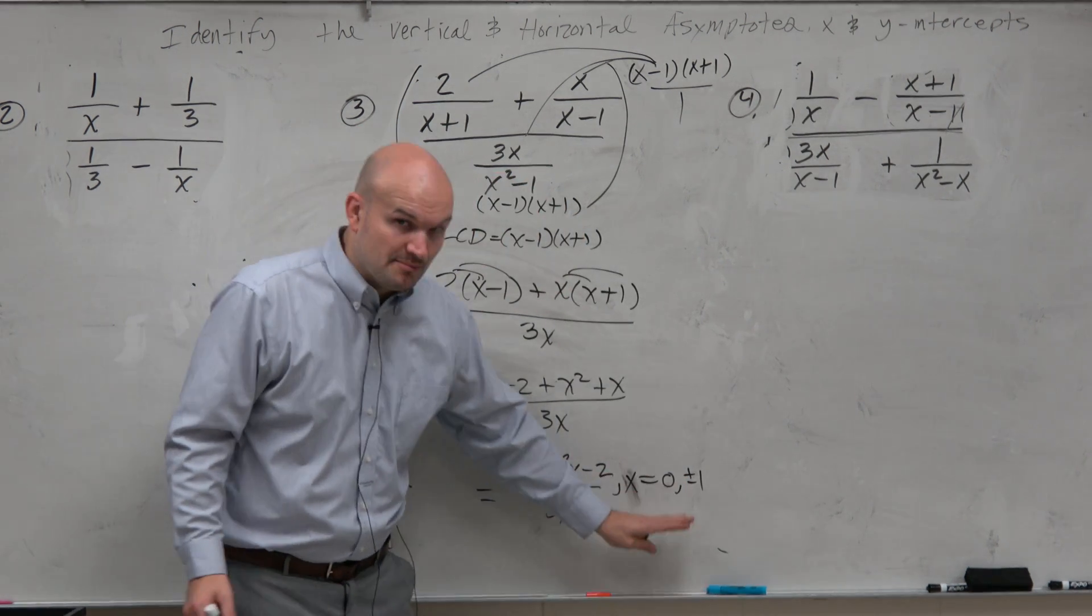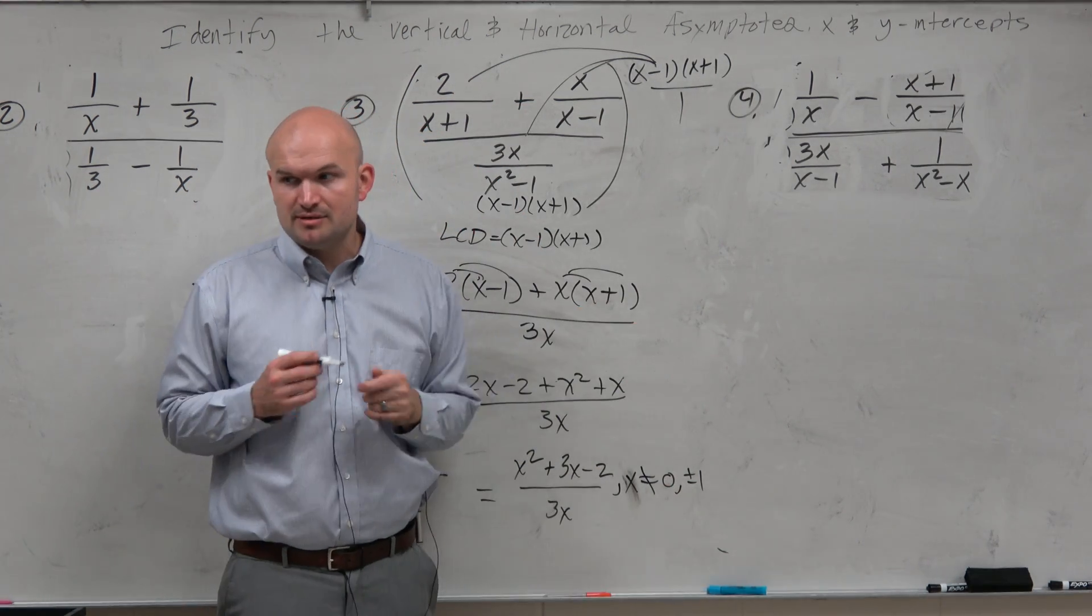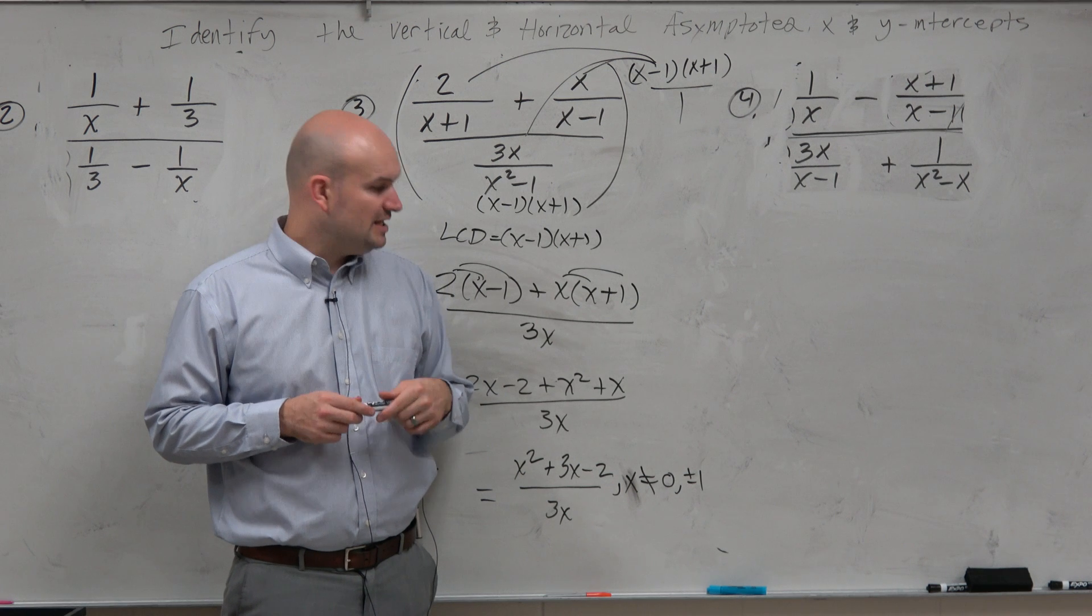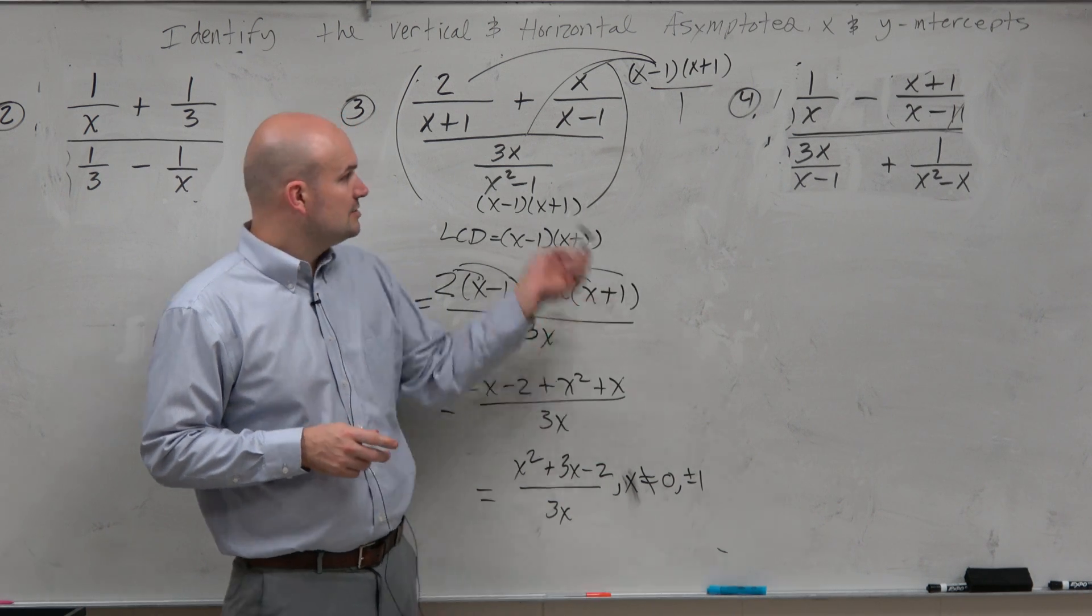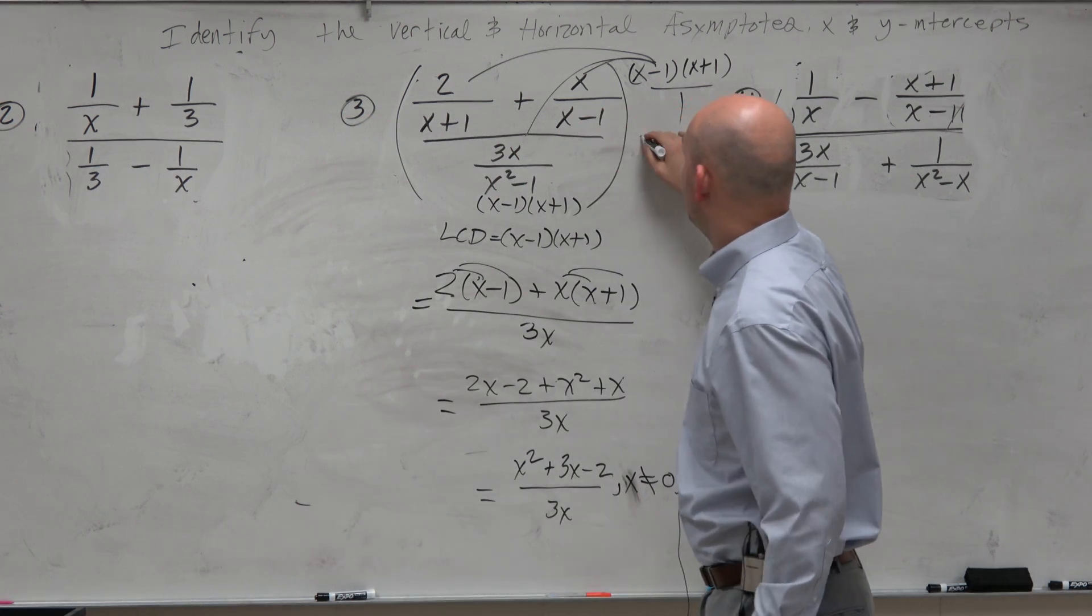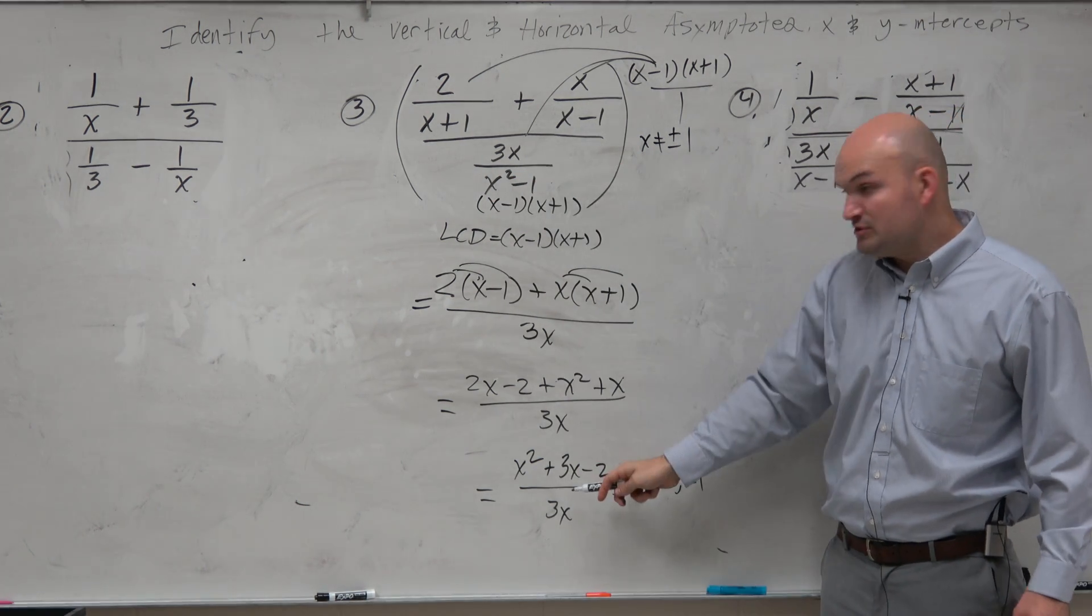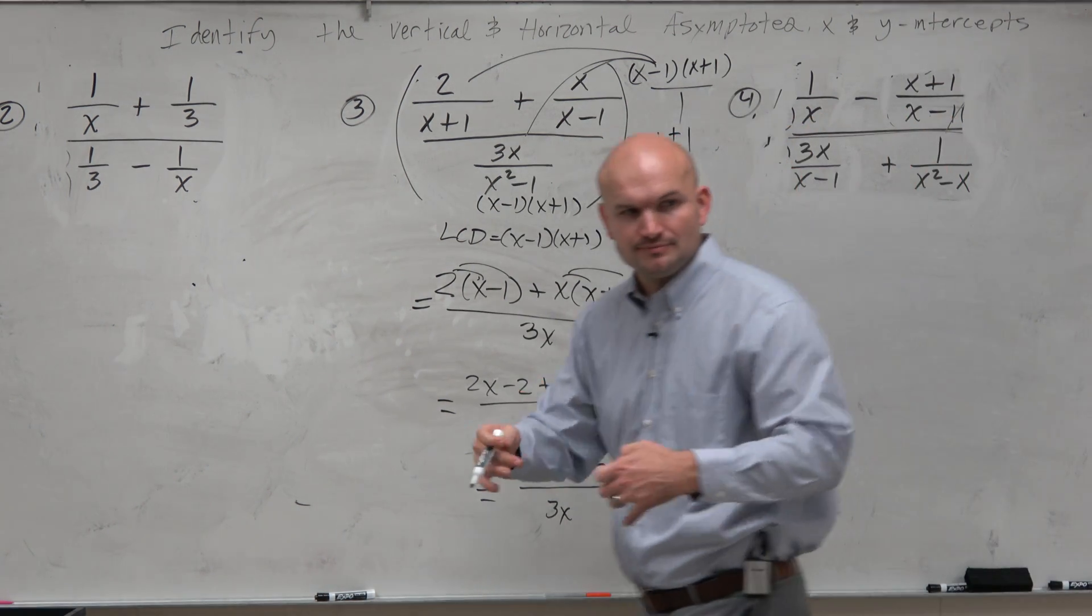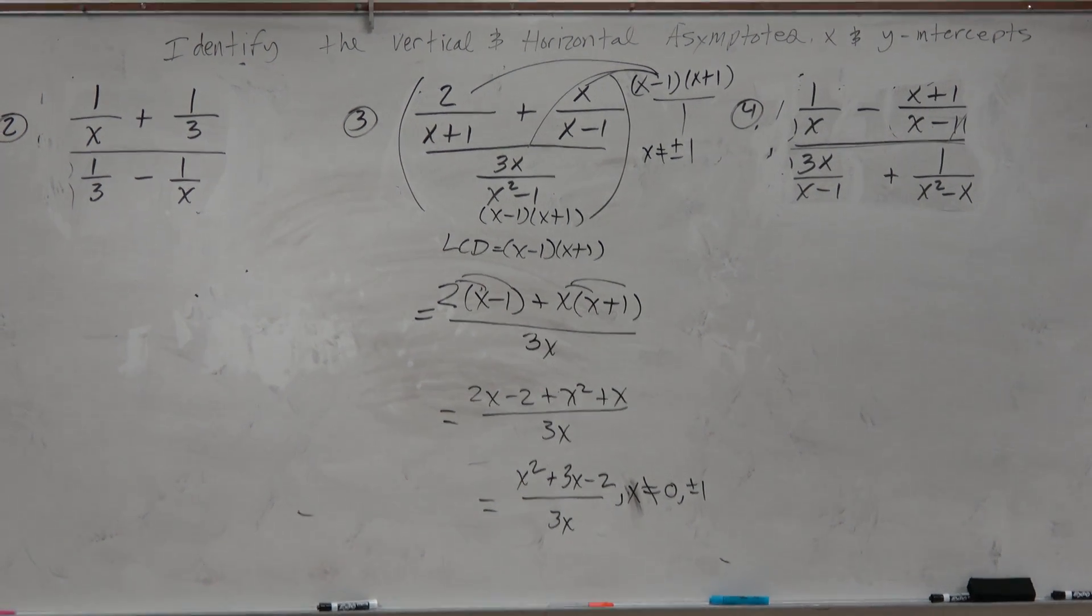What are the values that make the original function undefined? 1 and negative 1. So the restrictions of this simplified answer from this one is x cannot equal 0 and plus or minus 1. So wait, so the restriction for simplified can now be a restriction for the original? Yeah. You have to include both. Those are the restrictions of the problem. From the onset, you could have said, if you look at this problem, I know x cannot equal plus or minus 1, right? Without even doing anything, you can find those restrictions. And then once you simplify it, you say, oh, and after I've simplified it, x cannot equal 0. So you include them all.